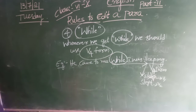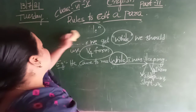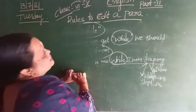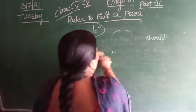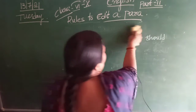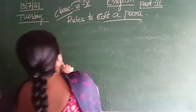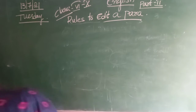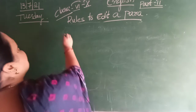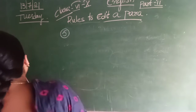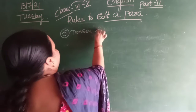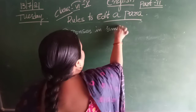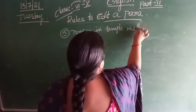Next, we will be learning rule number 5. What is rule number 5? It is regarding tenses. Already, from our first rules, we have been learning about present tense, past tense, present continuous tense, and past participle. So here, our fifth rule is tenses in simple method.